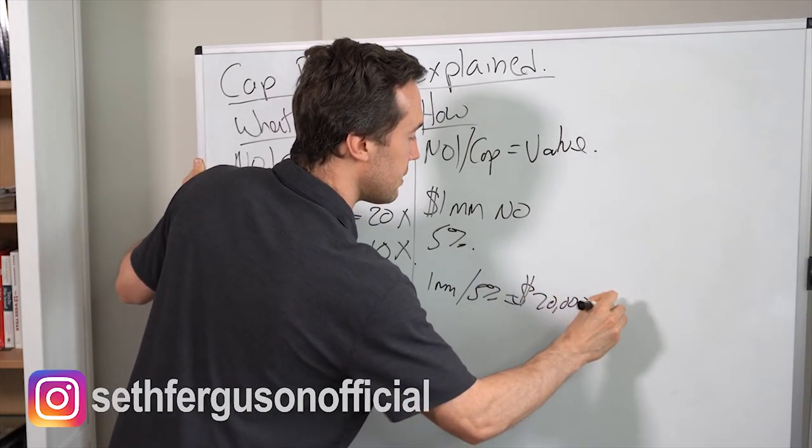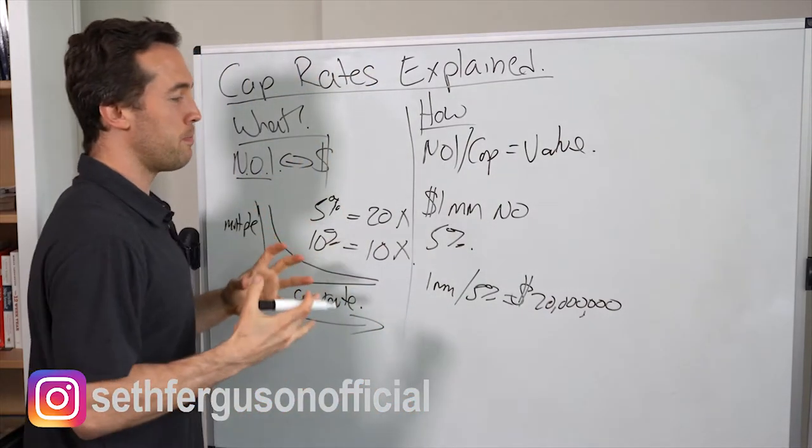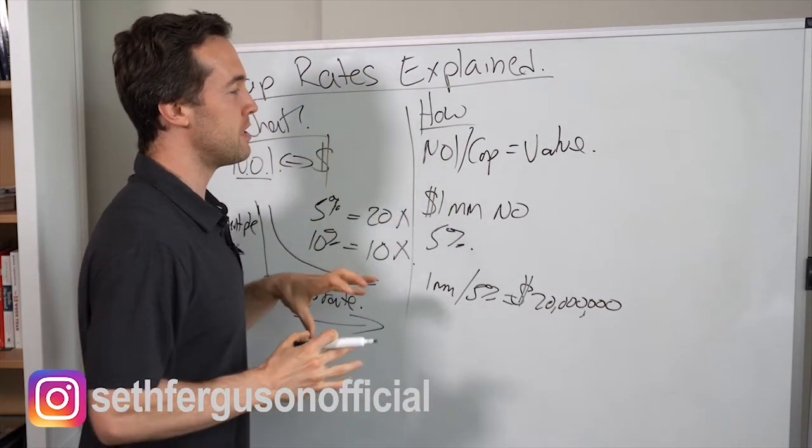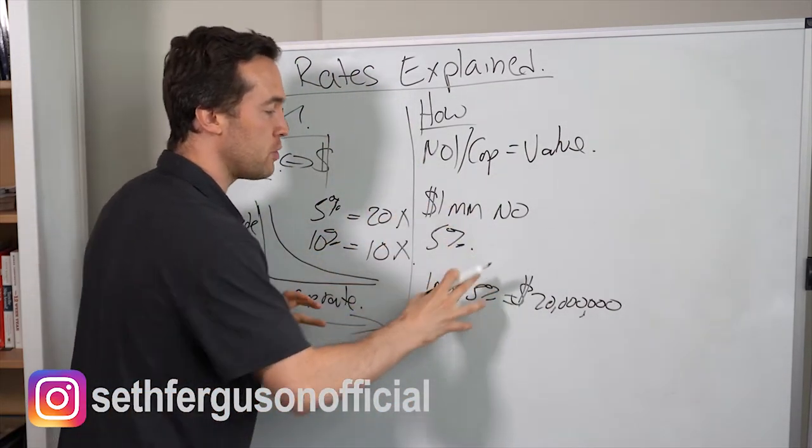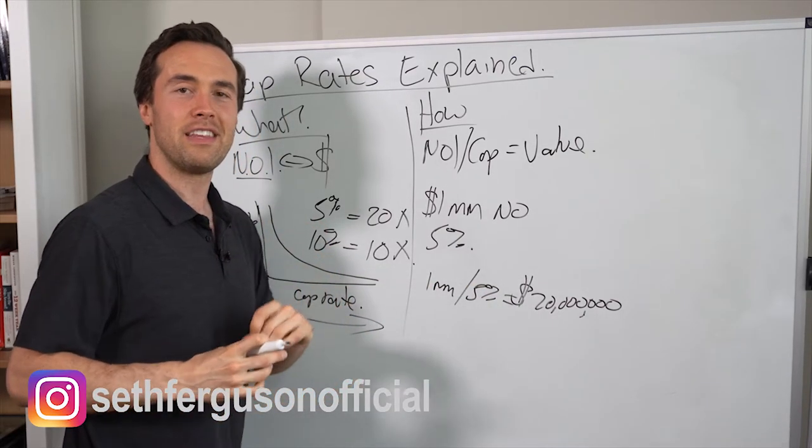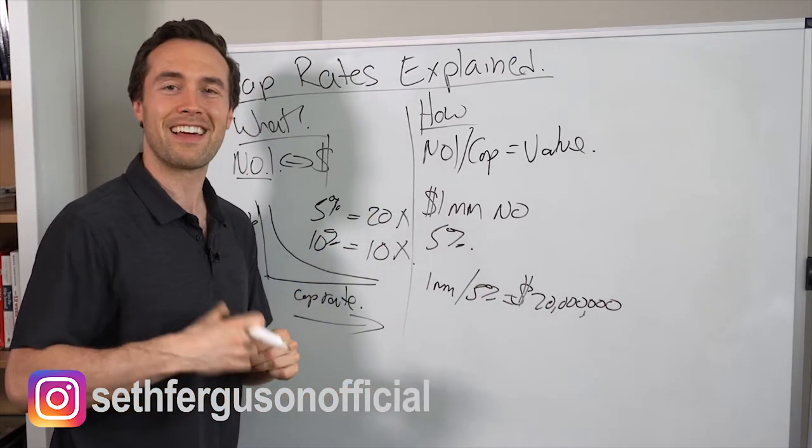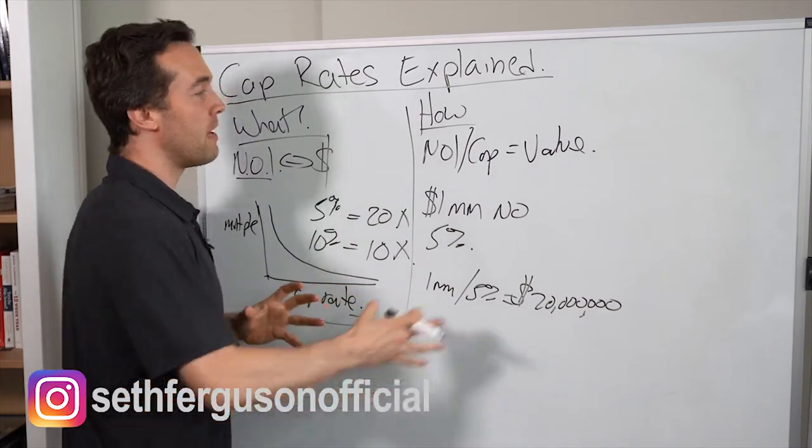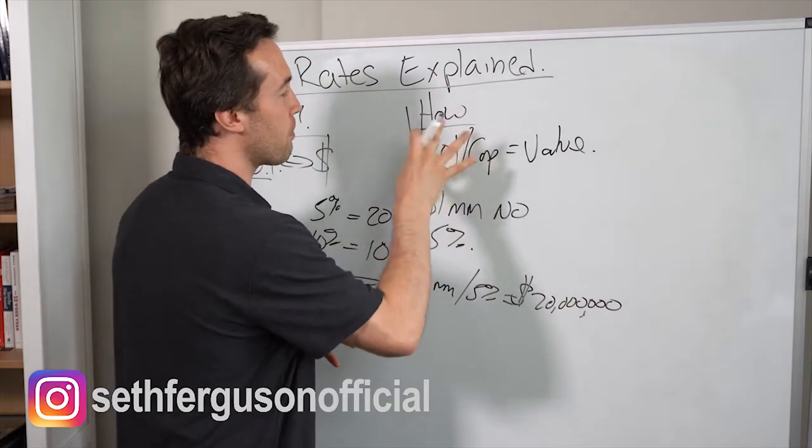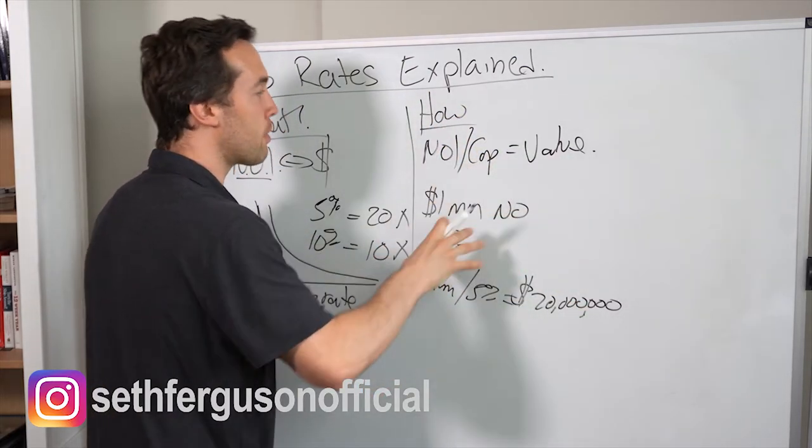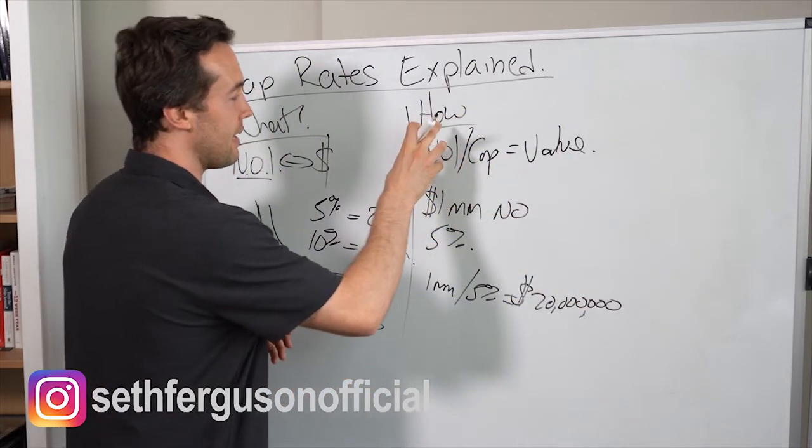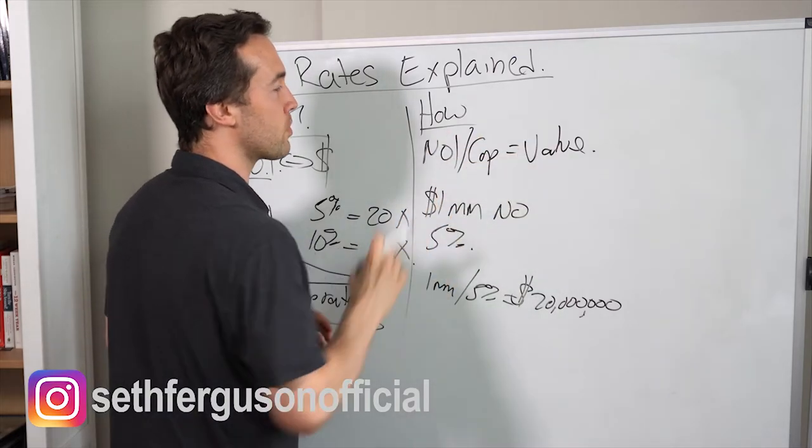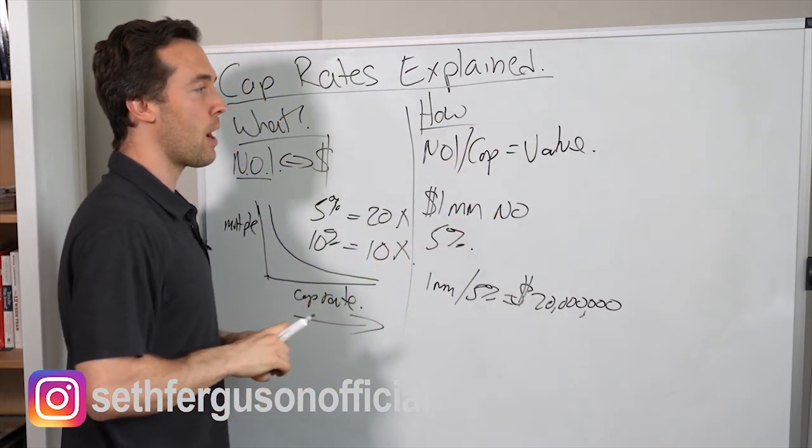The reason is, commercial property is valued based on the income the property produces. Now, the cap rate you're going to use is going to vary based on the location of the property, the class of property, so a class A is going to be different from a class C property. But generally speaking, when we're valuing property using the income approach, all we do is we take the NOI divided by the cap rate and that's going to give us the value of the property.